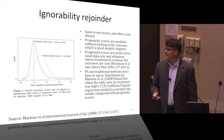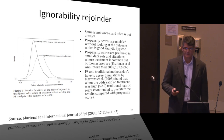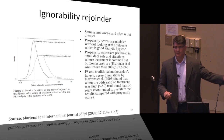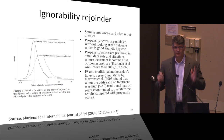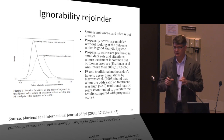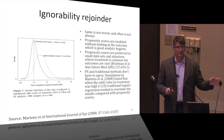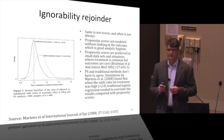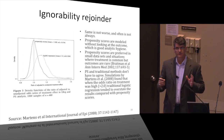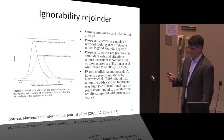The rejoinder to this: same is not worse. There are good reasons to arrive at the same answer through propensity scores — you develop them without knowledge of the outcome, which is good analytic hygiene. You can't run the outcome regression over and over tweaking specifications to get small p-values; with propensity scores you develop the score to achieve covariate balance, then apply it to the outcome just once. There's no room for shenanigans.